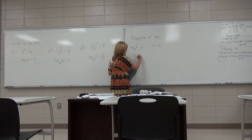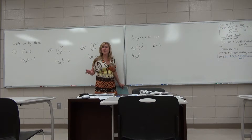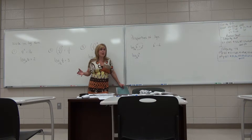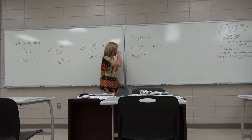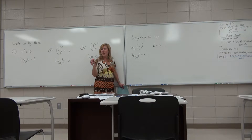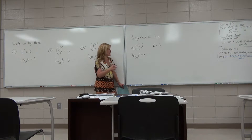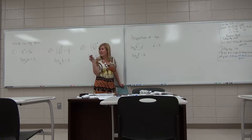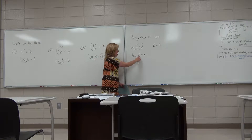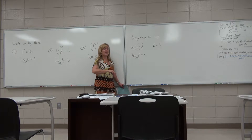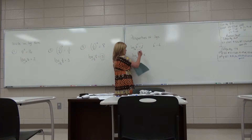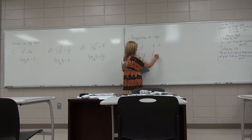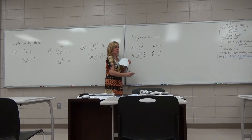Sometimes you'll see log base b of b to the x. A logarithm always equals the exponent, so it would equal x. Basically, because exponentials and logarithms are inverses, the bases cancel each other out and you're just getting the exponent — kind of like squaring and square rooting undo each other. The base of the logarithm and the base of the exponential function cancel each other out, so you just get x.